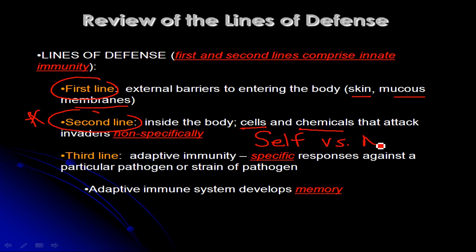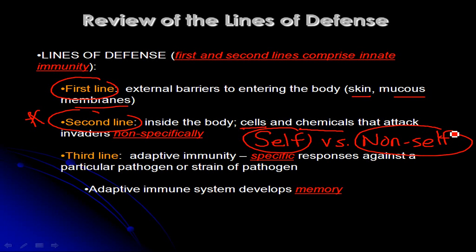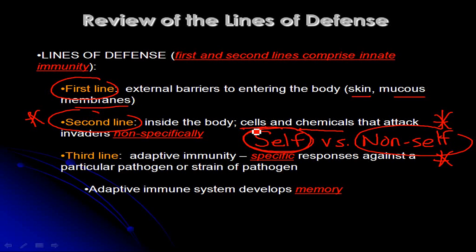The second line also includes various chemicals produced by cells that attack invaders non-specifically. One thing we really have not talked about yet with regard to the immune system is self versus non-self. Since we're in a microbiology class, we've mainly been thinking about your immune system attacking pathogenic microbes, but really your immune system is programmed to attack and destroy anything that is non-self — anything not naturally part of your body. Pollen, for example, is not a pathogen, but it is non-self.